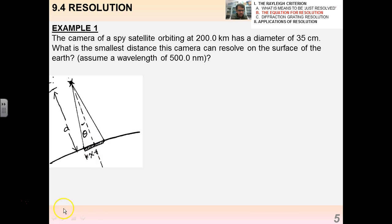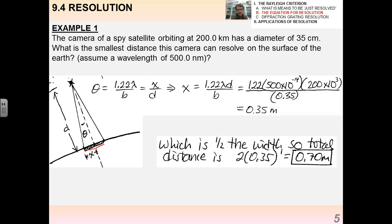So you can see here on the surface of the earth I have these two objects separated by this distance x. Here's d, this should really be a big D to keep in line with what we did before. So here we go: 1.22 lambda over b equals x over d. All I do is solve for x, and then I note that I want to double x to 70 centimeters. So this is quite amazing: a satellite that has a lens of diameter 35 centimeters orbiting 200 kilometers can resolve if I have two things that are 70 centimeters apart. It can actually from that distance tell that I have two separate objects in its image. It's quite remarkable actually.